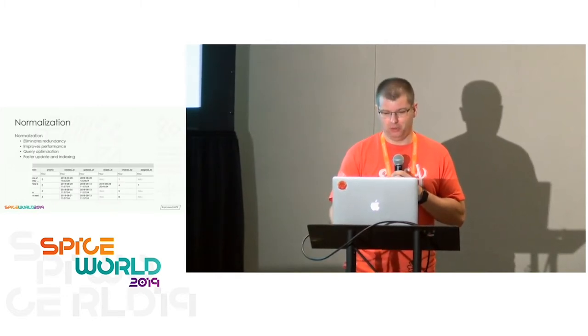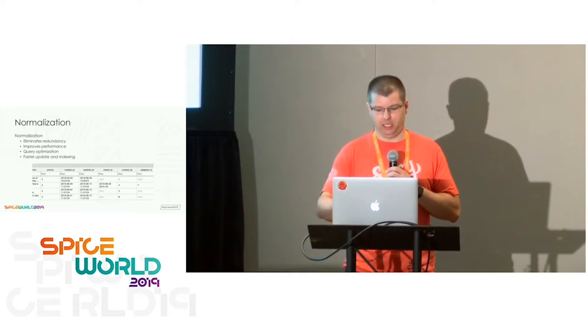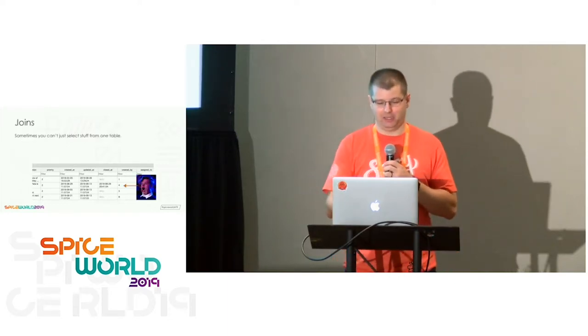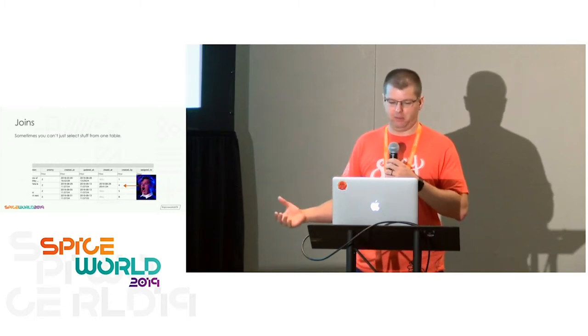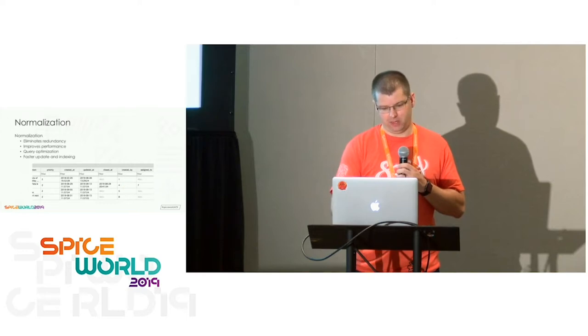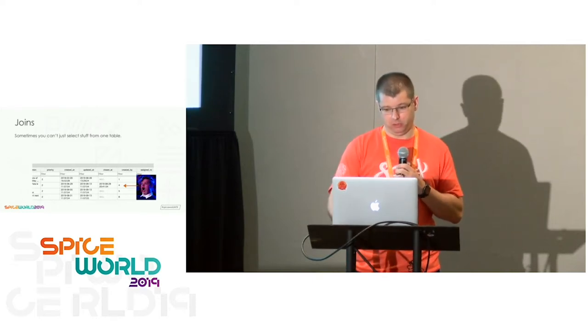Normalization is great for the database — it gets rid of redundancy. But you'll look at a tickets table and see 'created by' is just a number — well, who is that? Normalization is great for performance, efficiency, and query optimization, but it's not great for you because now you've got to deal with JOINs. If you just pull stuff out of that one table you'd get the ticket number, summary, and a number for who created it.